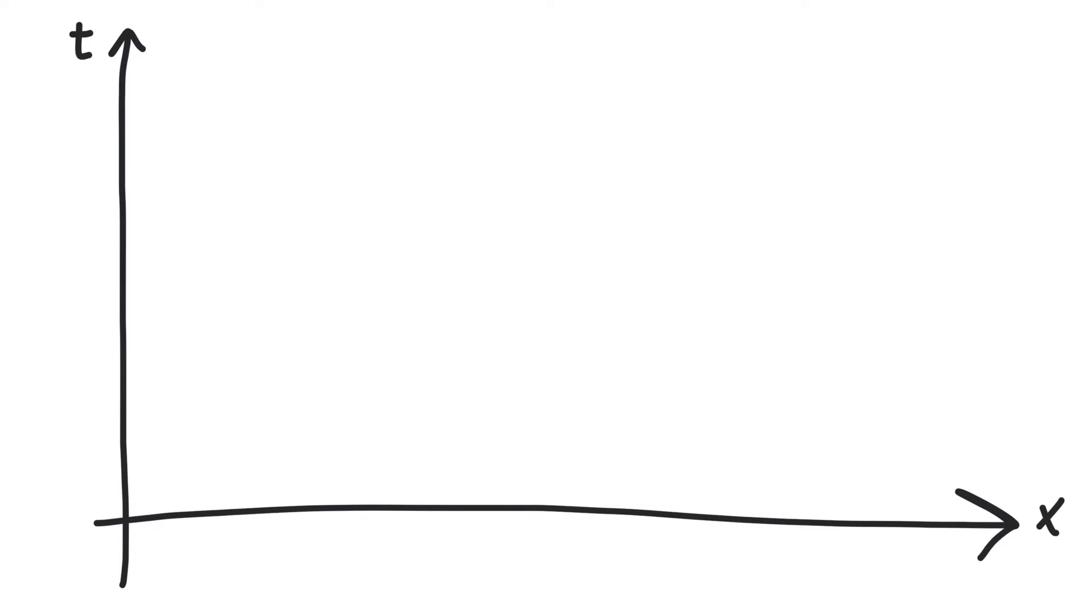Points in this diagram are called events. An event tells you where and when something happens. For instance, it's 6 o'clock in the morning and you wake up at home. You could either stay at home or go somewhere else. Let's stay at home.